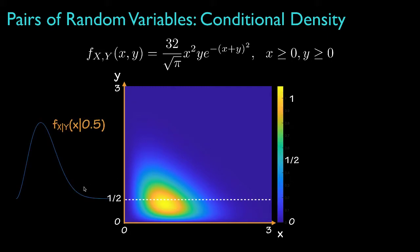Here, for example, is what the shape of the density would look like when y takes the value one-half. Recall that this is a slice through the joint density when y is equal to one-half, but then normalized by dividing by the marginal density for y, and that makes this conditional density integrate to one.